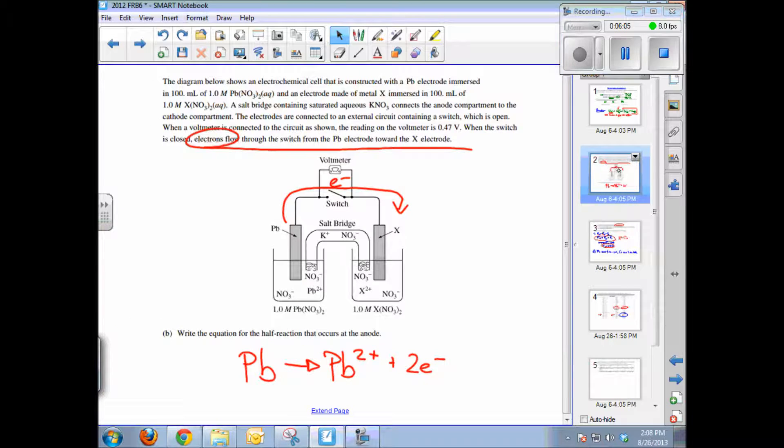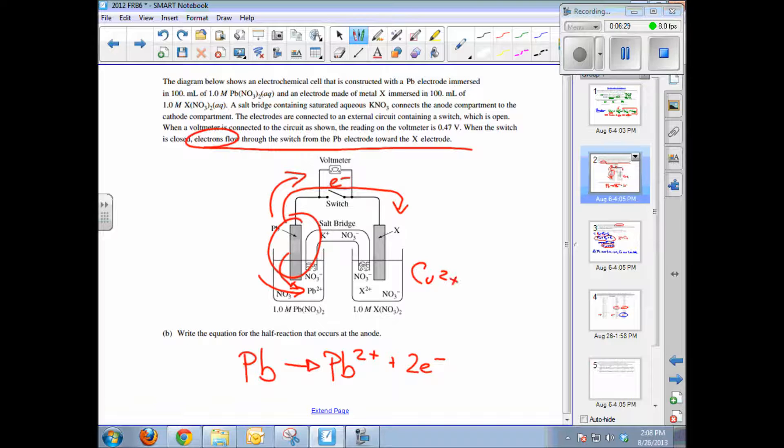Let's go back to the diagram. Remember that lead electrode on the left is what is being oxidized. And as that occurs, it gives up electrons, which goes through the circuit in that direction, and goes into solution as lead 2+. So in other words, lead is essentially dissolving and going into solution. Whereas X, which we now know is copper 2+, copper accepts those electrons and plates into the solid phase. So the mass of the copper electrode increases over time.